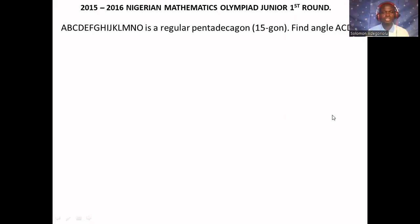To provide solution to this question, let's recall the formula for interior angle of a regular polygon, which is 180 degrees times (n minus 2) over n, where n is the number of sides. The regular polygon given is pentadecagon, which is 15 sides. So replace n with 15. And that's going to be 180 degrees times (15 minus 2) over 15.